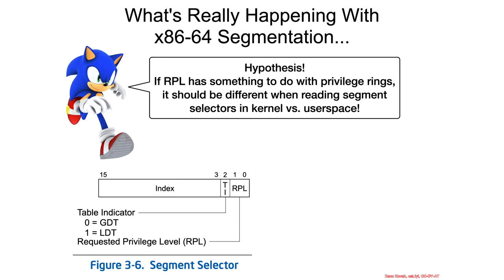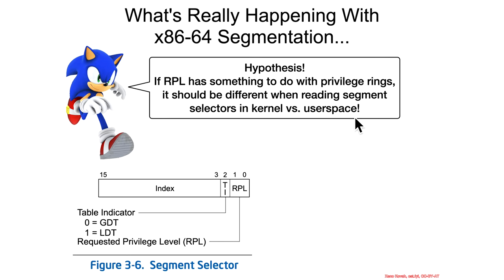SOMIC has a hypothesis: if the RPL has something to do with privilege rings, as it sort of suggests, then it should be different when reading segment selectors out of segment registers in kernel versus user space. To test this hypothesis, we need to go read segment selectors in kernel versus user space. We'll be right back.